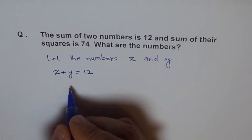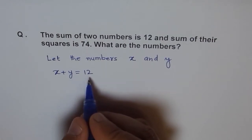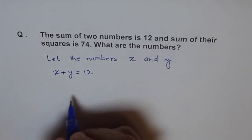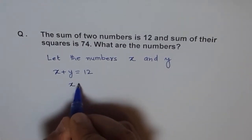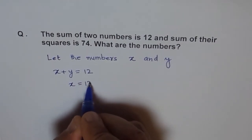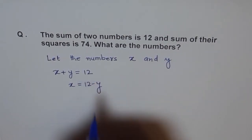And from here, because there are two variables, it is a good idea to write one in terms of another. So, we can say x is equal to 12 minus y. That is the first equation.